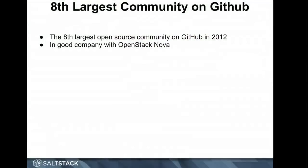In 2012, at the end of the year, GitHub published a blog post called The Octoverse. SaltStack and Salt was named the eighth largest developer community on all of GitHub for that year — OpenStack Nova was number seven. Salt has gained a huge amount of community traction and community code, which we're very grateful for. It drives home the fact that a project started in a basement was able to generate so much community traction over the course of just a year and a half.